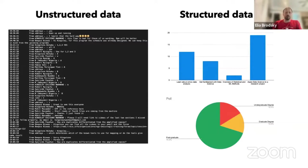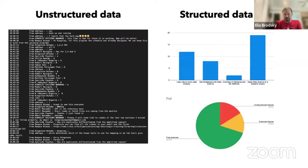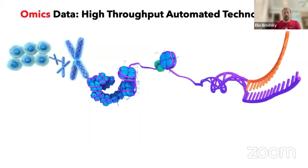This is a simple example, but let's think about biology. In biology, a lot of times we're dealing with high-throughput automated technologies. These are technologies that can produce images, they can produce sequencing data like genomics, and epigenomic peaks that I can study for variation produced by epigenetic processes.